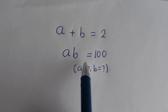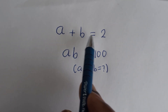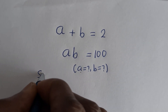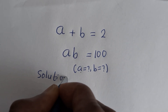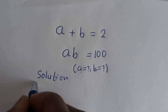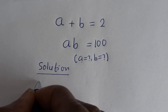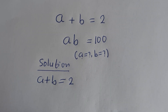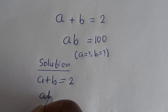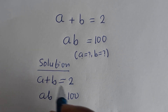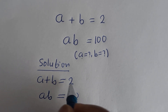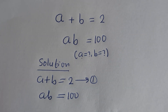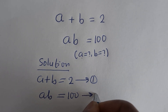How to solve for A and B in this equation: A plus B is equal to 2, and AB is equal to 100. We have A plus B is equal to 2, then AB is equal to 100. Let us call A plus B equals 2 equation 1, and AB equals 100 equation 2.